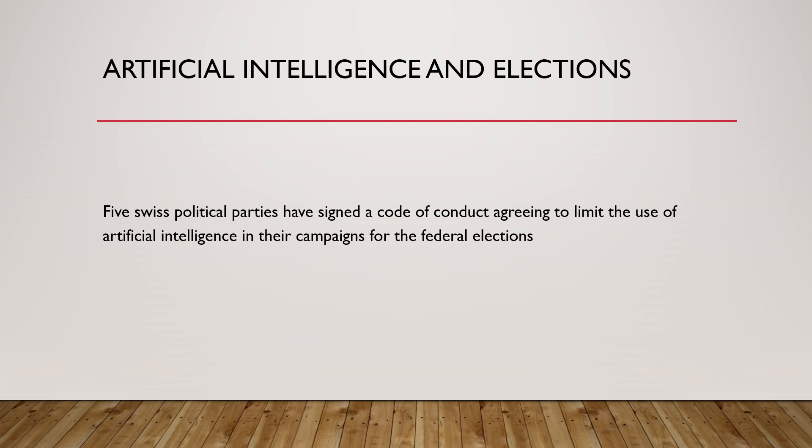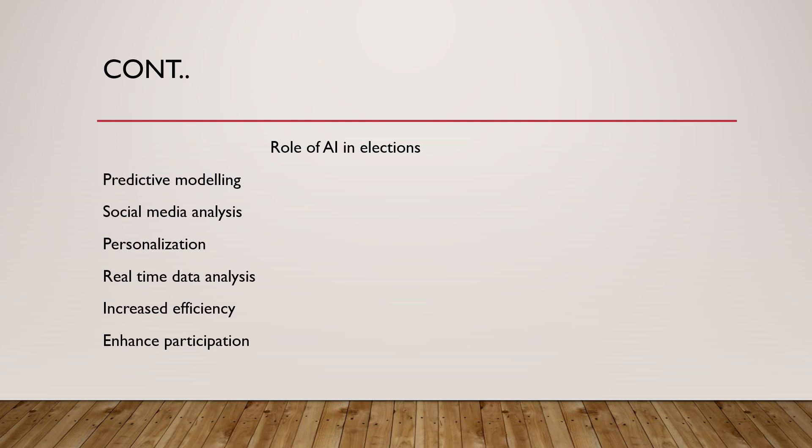Our third topic is Artificial Intelligence and Elections. Five Swiss political parties have signed a code of conduct to limit the use of Artificial Intelligence in their campaigns for federal elections. The role of AI in elections includes predictive modeling — it can predict the behavior of people, which party they are supporting, and which party is gaining in constituencies. It can also perform social media analysis to understand trends, and political parties can frame their manifestos accordingly.